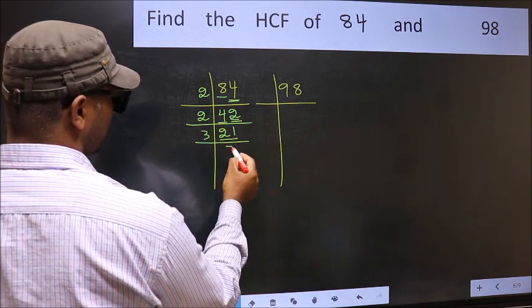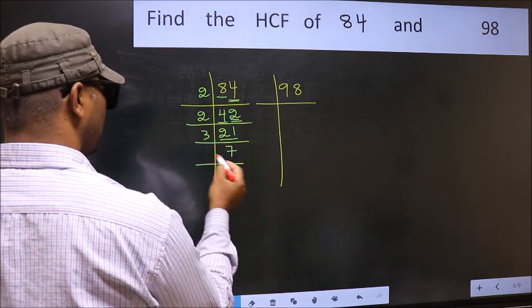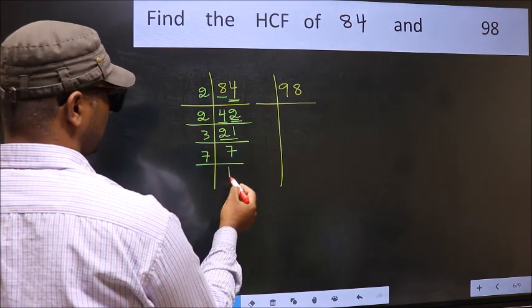Now 21 is 3 times 7 is 21. 7 is a prime number, so 7 times 1 is 7.